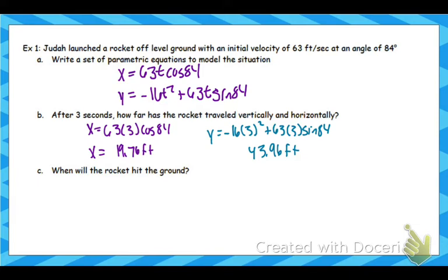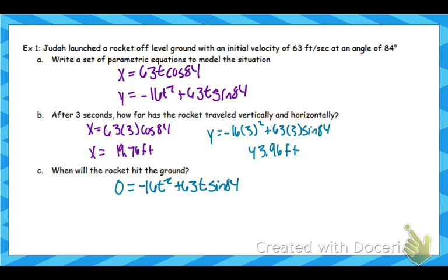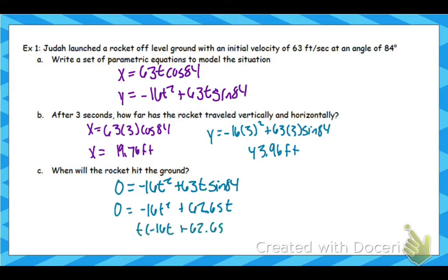When will the rocket hit the ground? So algebraically, this is saying when is the height 0. So I'm going to take the y equals equation and plug in 0 for y, and we're going to solve for t. This looks kind of ugly, but what you need to remember is 63t sine 84 — 63 times the sine of 84 is just a decimal. So I'm going to plug that into my calculator. 63 sine 84 is 62.65, so this means 62.65 times t. If I want to solve for t here, t is the GCF. I can factor it out. And then the way I would solve this is set each factor equal to 0.